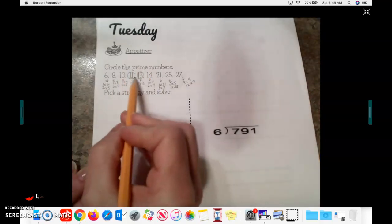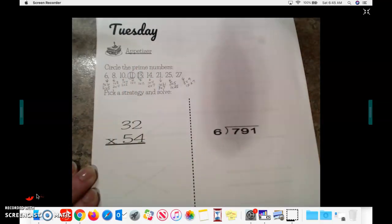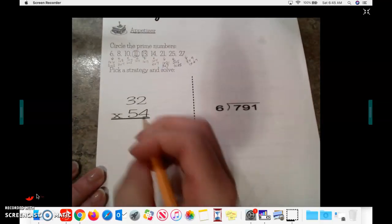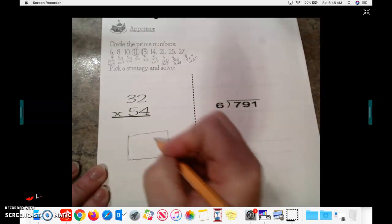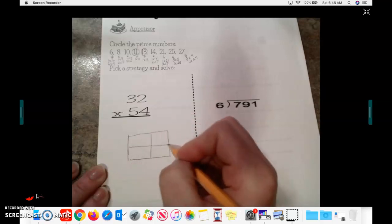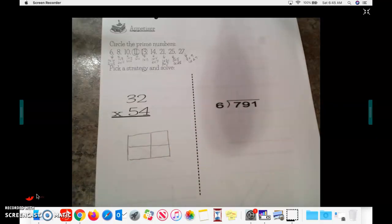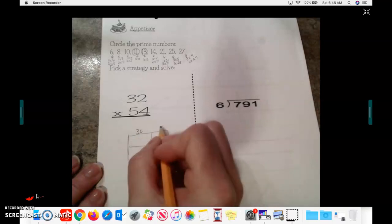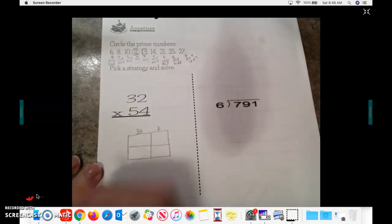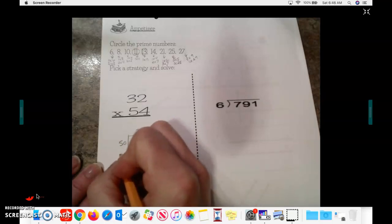So in this case, the only prime numbers are 11 and 13. Multiplication today, again, I'm going to use the box method to help me organize my multiplication. I'm going to need 4 boxes because it is a 2-digit by 2-digit. I'm going to break 32 down into 30 and 2. I'm going to break 54 up into 50 and 4.